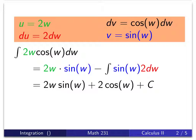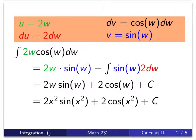Now remember we had an initial substitution. w was equal to x², so if we re-substitute, we have our function whose derivative is equal to the original problem of 4x³ cos(x²).